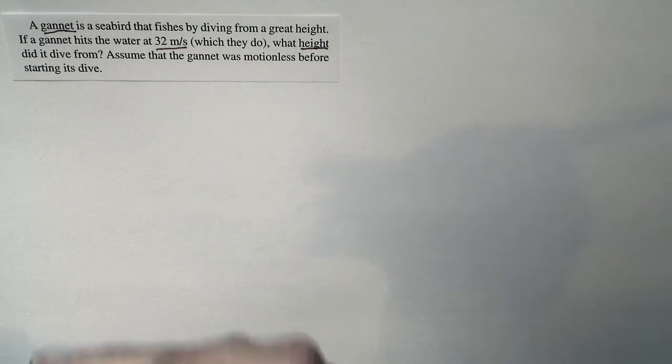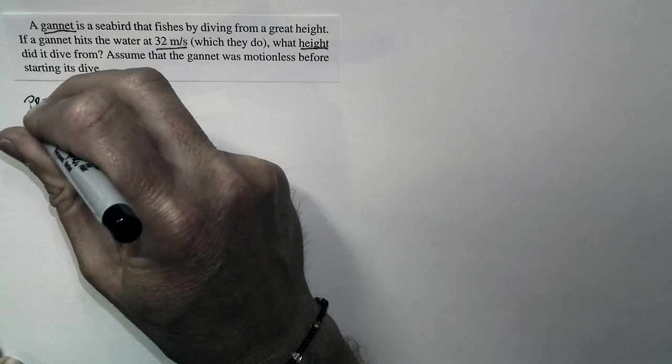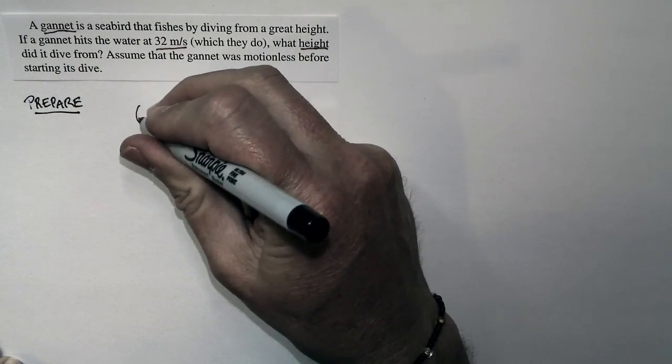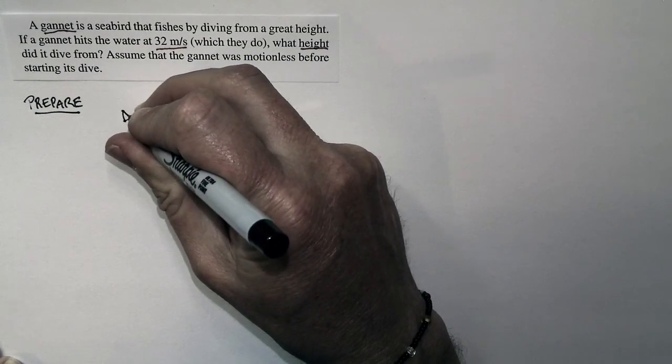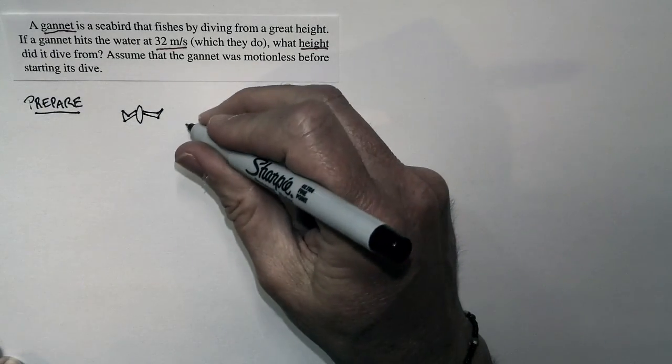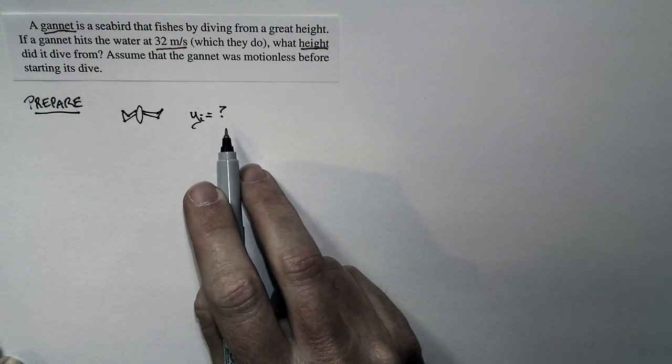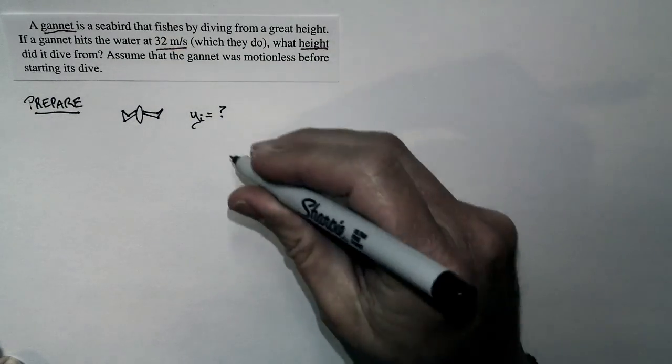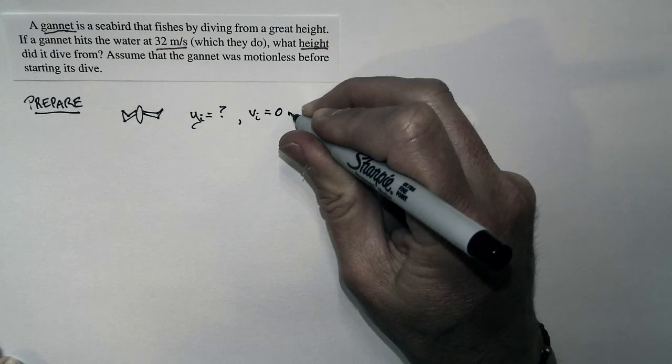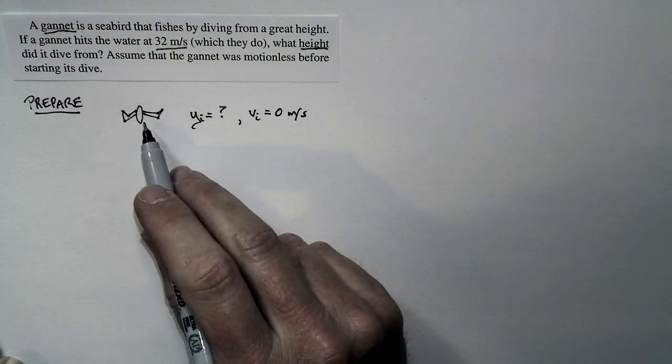Now, let's go ahead and prepare by drawing a pictorial representation. I'm also going to put my known values on it. So the gannet starts out here up in the air, starting at an initial height of we don't know. In fact, that's what we're looking for. And it's starting with an initial speed of zero because it starts at rest, because we're told to assume that it's motionless before starting its dive.